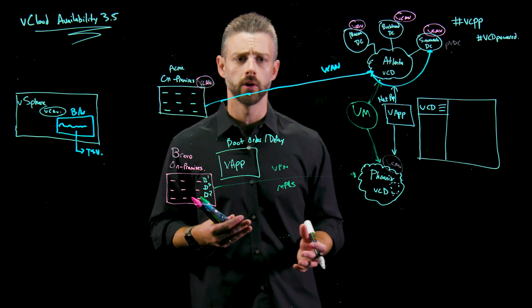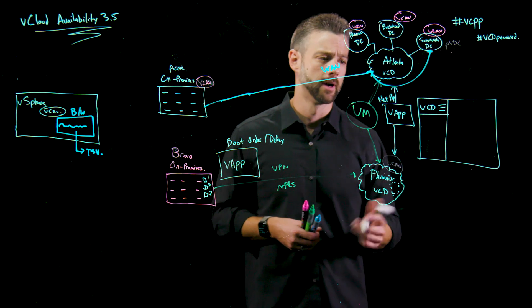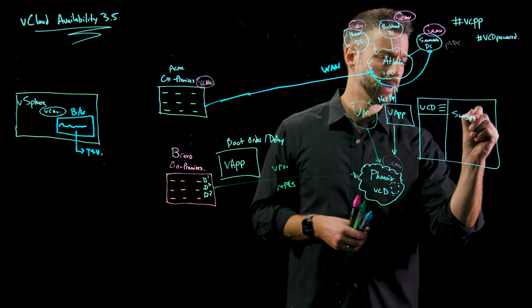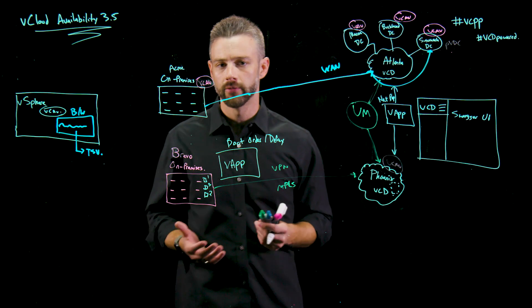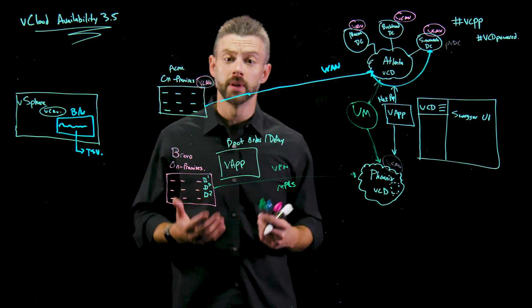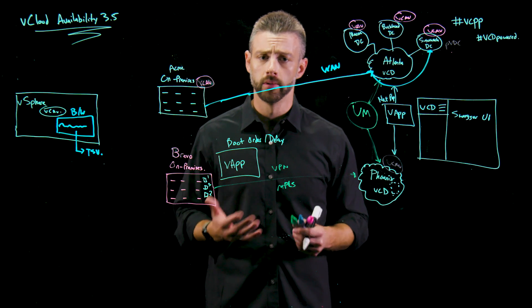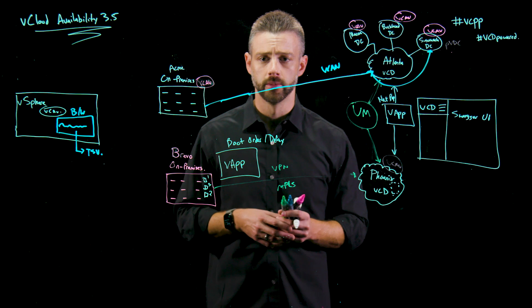Now, if we kind of pivot over to what are some of those operational enhancements within the environment, as the provider UI, we have a Swagger UI identified within the overall environment to allow for that extensibility framework and see what's available from a public API perspective with vCloud Availability, and pulling some of those metrics and protected workloads through an extensible API.